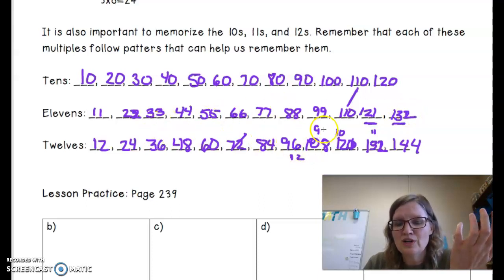11 times 10 is 110. 11 times 11 is 121. And 11 times 12 is 132. When we get to our 12s, we know that 12 times 9 is 108. 12 times 10 is 120. Thank goodness, don't we love the 10s? And 12 times 11 is 132. And finally, 12 times 12 is 144.